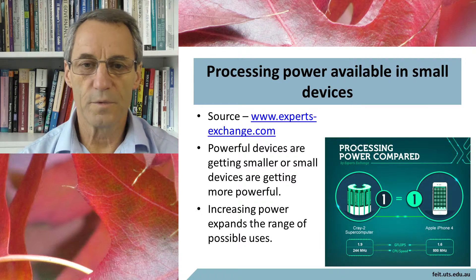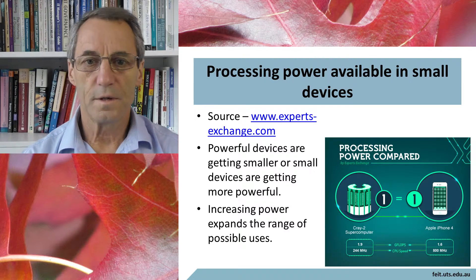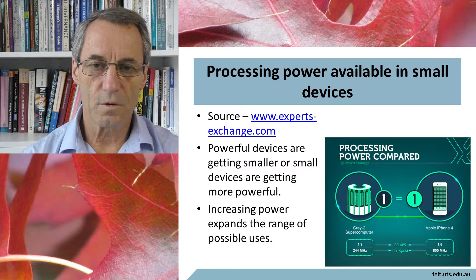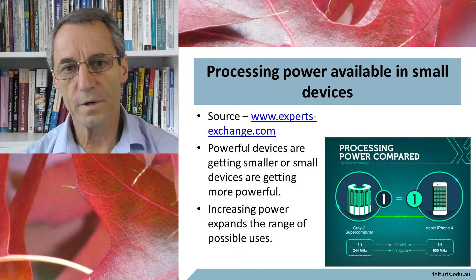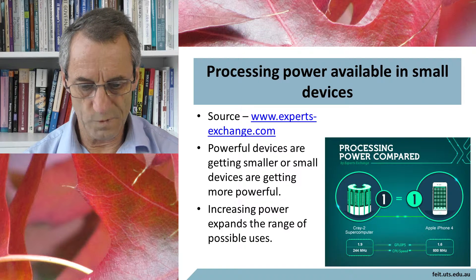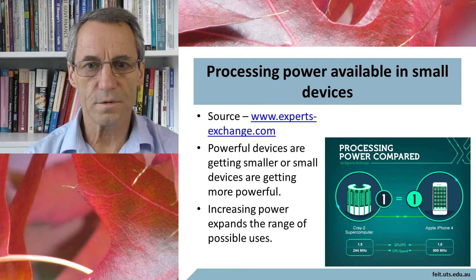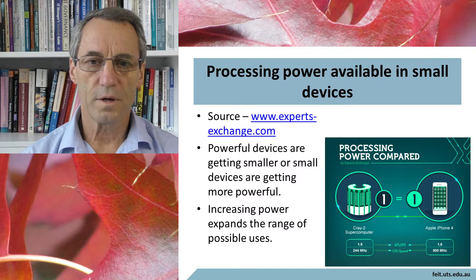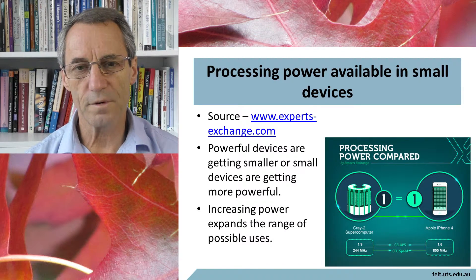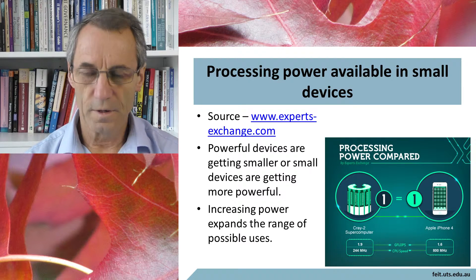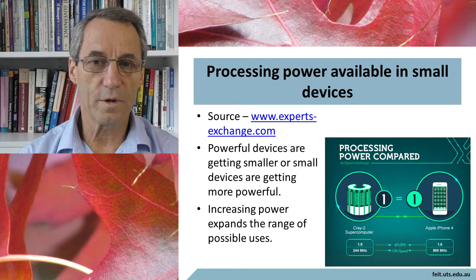When talking about the processing power of these things, here's a reasonable comparison: the iPhone 4 is about as powerful as the Cray 2 supercomputer. The Cray 2 came out in about 1992 or 1993, and the iPhone 4 came out around 2010. The difference is the iPhone 4 is a portable consumer device costing less than a thousand dollars, whereas the Cray 2 cost millions and was cooled with liquid Freon — it really was a supercomputer at the time. In terms of available power, there's getting much more power available on much smaller devices.